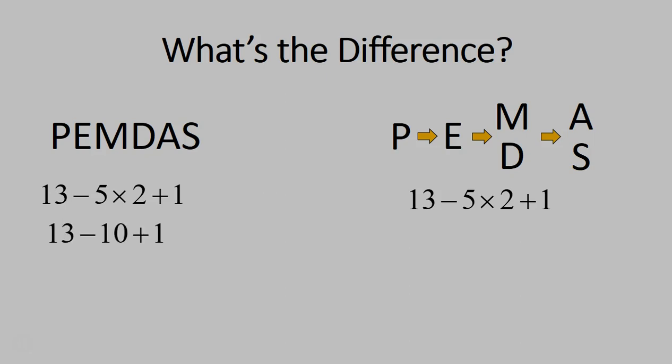Over on the right, take a look. No parentheses, no exponents. Then we would do our multiplication and division in one step from left to right. And all there is is multiplication. 5 times 2 is 10. So we're looking very much the same so far.